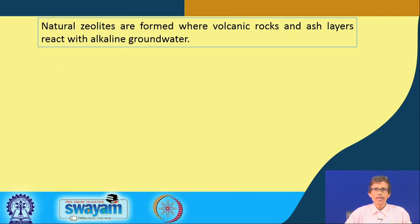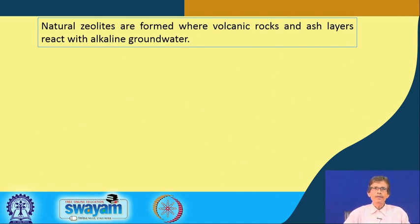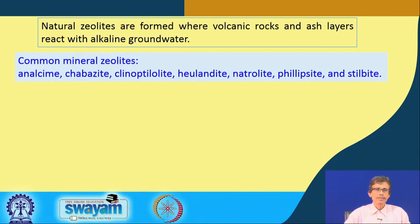Think of it in terms of a typical inorganic chemistry reaction where the material is that volcanic rock and you have the ash layers which are reacting if the groundwater is strongly alkaline. Due to that reaction we basically get the formation of the natural mineral which is your zeolites.